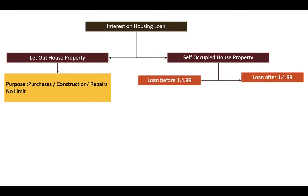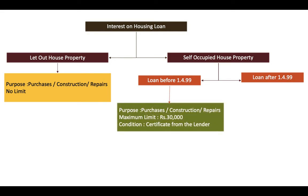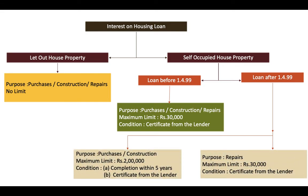For self-occupied house property, you need to see whether the loan was taken before or after 1st April 1999. If taken before 1/4/1999, the maximum limit is only ₹30,000 — whether for purchase, construction, or repairs. If taken after 1/4/1999 and the purpose is purchase or construction, the maximum limit is ₹2,00,000, provided the assessee proves construction is completed within 5 years. If taken after 1/4/1999 for repairs, the maximum limit is ₹30,000.